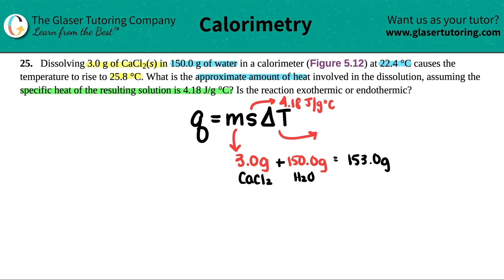Now let's find that delta T. They did tell us it was starting off at 22.4 degrees Celsius and rising to 25.8 degrees Celsius. So if I do my final temp minus initial temp, which is what delta T equals, my final temp was 25.8 degrees Celsius minus 22.4 degrees Celsius. So 25.8 minus 22.4, I get 3.4. This equals 3.4 degrees Celsius. That's my delta T.